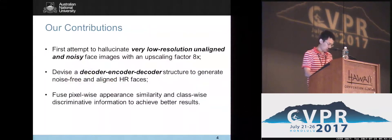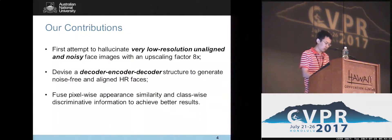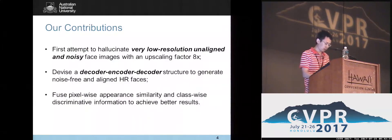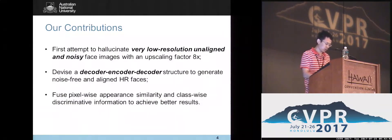In this work, we have three main contributions. We first attempt to upsample very low-resolution noisy faces. Second, we propose a decoder-encoder structure to obtain better results. Third, we use pixel appearance similarity for super-resolution as well as a class-specific discriminator to enhance the hallucination results.